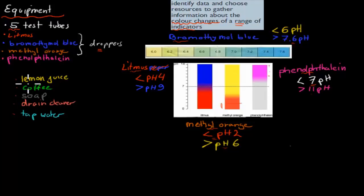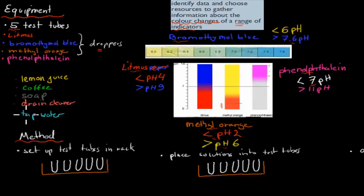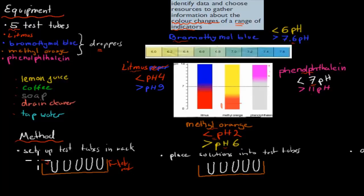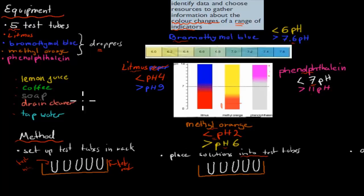What we would do is test these substances with the different indicators and see what colors they change to, to determine what kind of pH they have. For the method, you would have your 5 test tubes in your test tube rack. That's the first part. The second part is to place the solution into the test tubes — now we're going to look at those 5 solutions and start placing them into the actual test tubes.